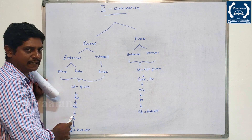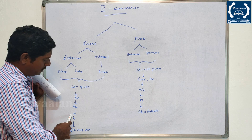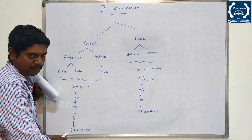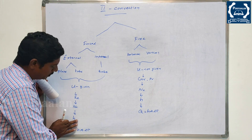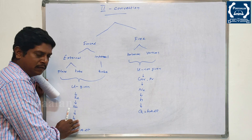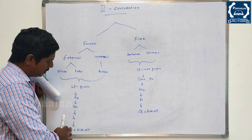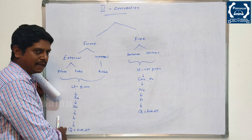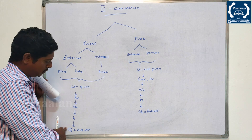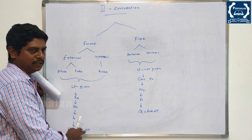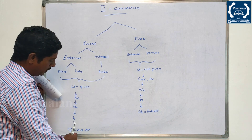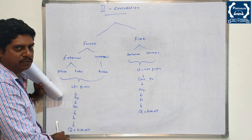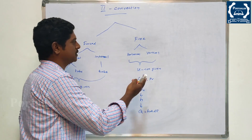H is the convective heat transfer coefficient — that is what we have to find. Finally, that coefficient value gives Q, the heat transfer. H equals Nu·k, and Q is equal to H into A into ΔT. That is the procedure for forced convection.